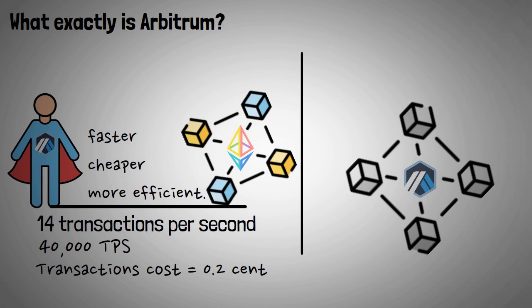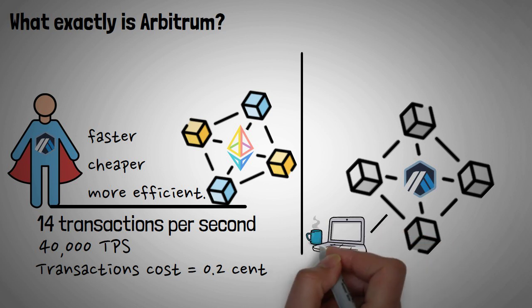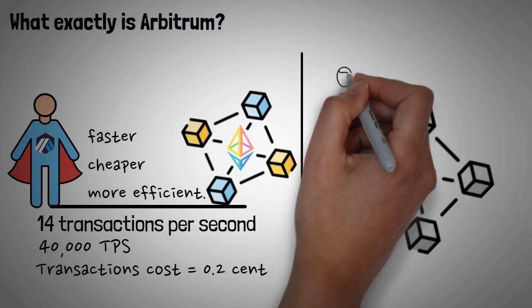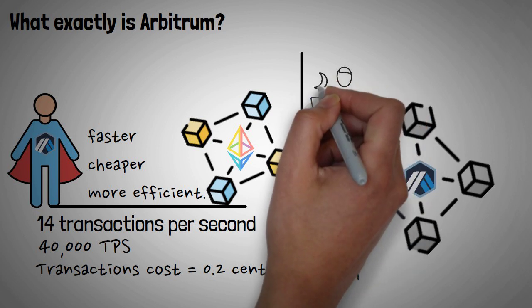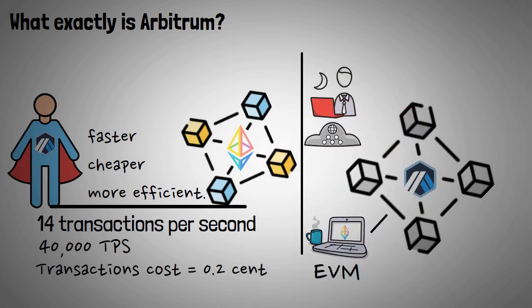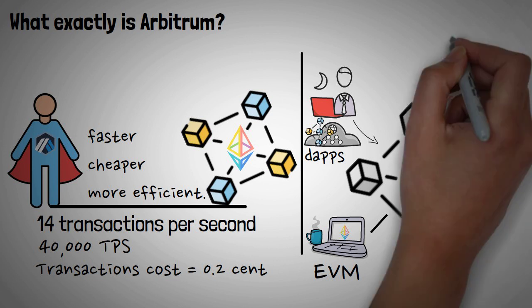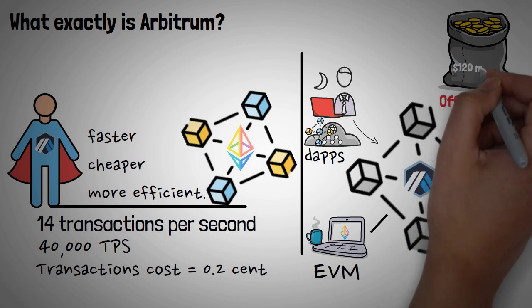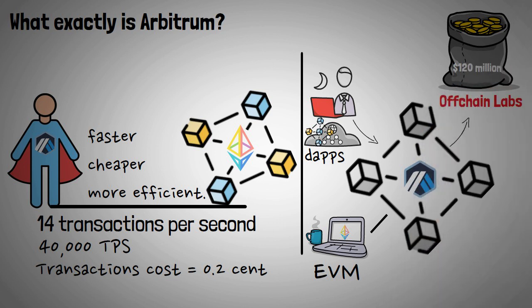Plus, Arbitrum also supports the Ethereum Virtual Machine, or EVM, meaning that Ethereum DeFi developers can integrate their decentralized applications, also known as dApps, with Arbitrum without having to make any modifications. Furthermore, Arbitrum was created by Offchain Labs, and the company has raised about $120 million in a Series B funding round in September 2021.